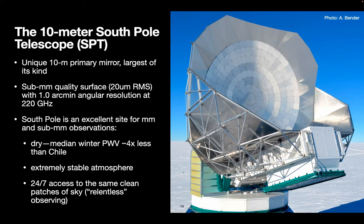The South Pole is also an excellent site for millimeter and sub-millimeter observations because the atmosphere is extremely dry. The median winter precipitable water vapor is a few times better than Chile. Not only is it dry some of the time — it's dry most of the time, with extremely stable atmospheric conditions throughout the entire winter, basically nine months of excellent observing conditions. Being at the pole also means continuous access to the same patch of sky, allowing relentless observations of the same measurements over and over for years at a time.